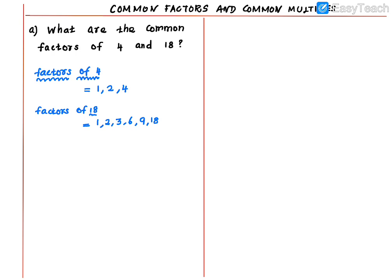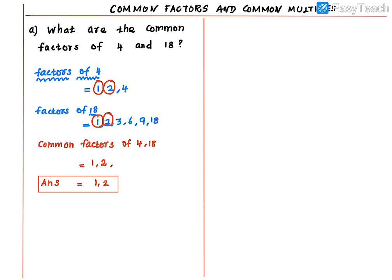Now look at the question: what are the common factors of 4 and 18? Write the common factors — 1 is present in both, so 1 is a common factor. 2 is also present in both, so 2 is a common factor. 3 is in factors of 18 but not in factors of 4. So the answer is 1 and 2. Put a box around the final answer: common factors of 4 and 18 = {1, 2}.